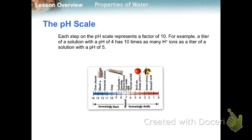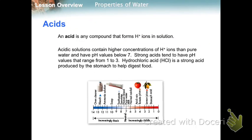Each step on the pH scale is a factor of 10. So a liter of solution with a pH of 4 has 10 times as many hydrogen ions as a liter of solution with a pH of 5 — the strength increases substantially even when going up by just one number.